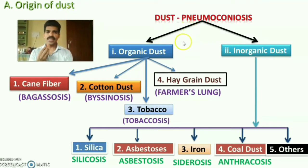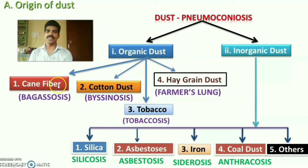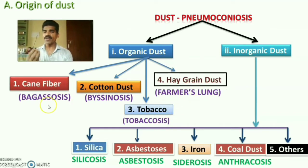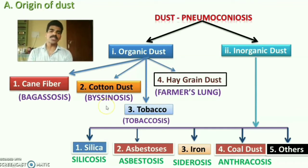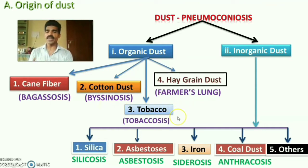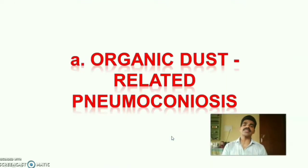Organic dust includes cane fiber dust, cotton dust, tobacco dust, and hay grain dust. Cane fiber dust leads to bagasosis; cotton dust leads to byssinosis (spelled B-Y-S-S-I-N-O-S-I-S); tobacco dust leads to tobacosis; and hay grain dust leads to farmer's lung disease.